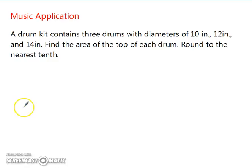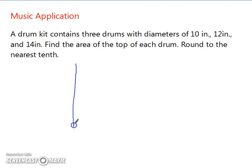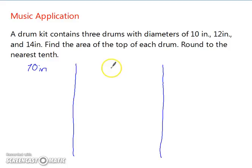Let's look at a music application. A drum kit contains 3 drums with diameters of 10 inches, 12 inches, and 14 inches. Find the area of the top of each drum rounded to the nearest tenth. We'll split the work into three parts for the 10-inch, 12-inch, and 14-inch drums.